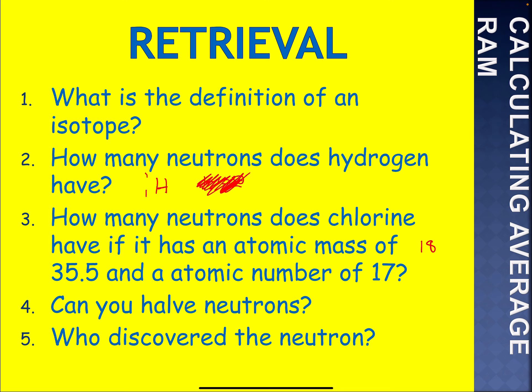Number two: how many neutrons does hydrogen have? Well, this is hydrogen — atomic mass one, atomic number one — so the number of neutrons is one take away one, which is zero. So a hydrogen atom has zero neutrons.